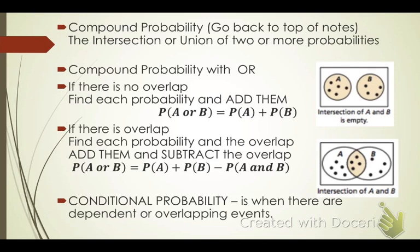Now let's look at compound probability using the word OR. Compound probability is the intersection or union of two or more probabilities. When you use the word OR, you are going to add your probabilities. If there is no overlap between the events, find each probability and add them: P(A or B) = P(A) + P(B). If there is some overlap, find each probability and the overlap, add the probabilities and subtract the overlap: P(A or B) = P(A) + P(B) − P(A and B).